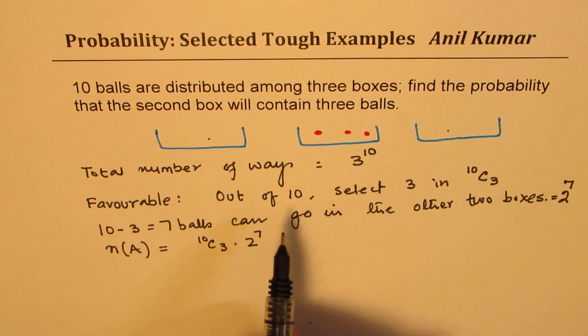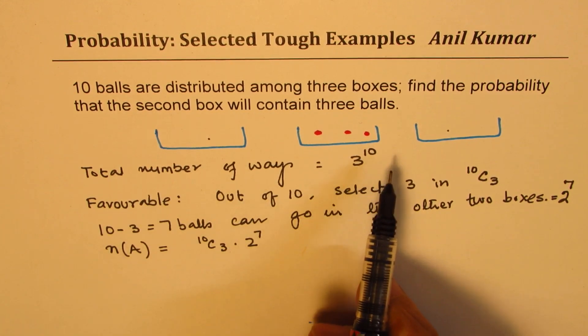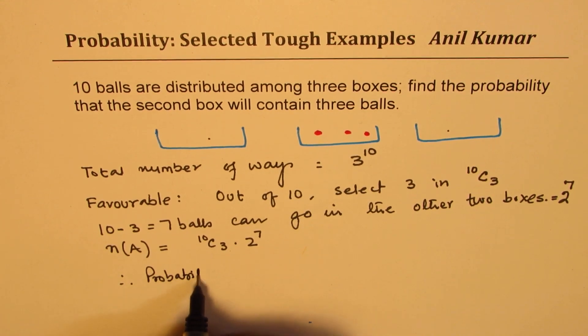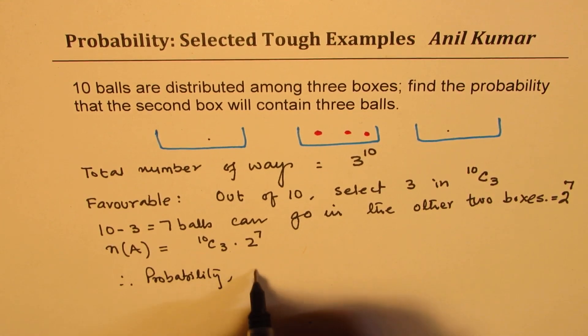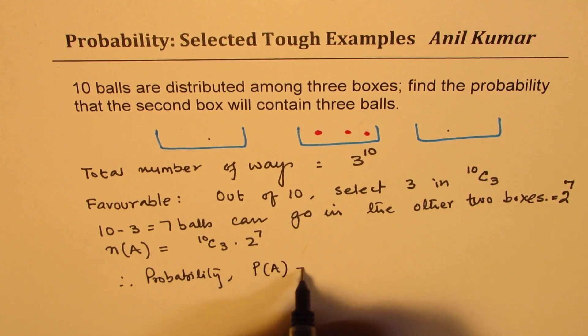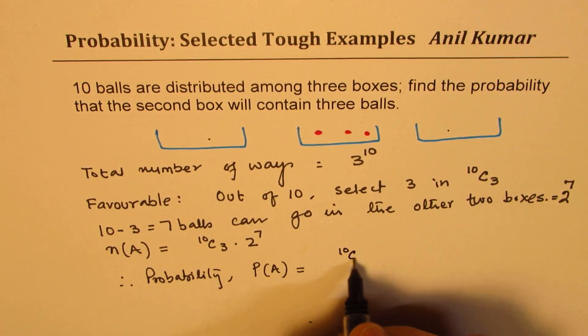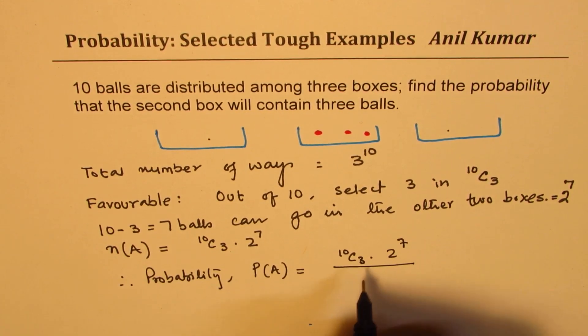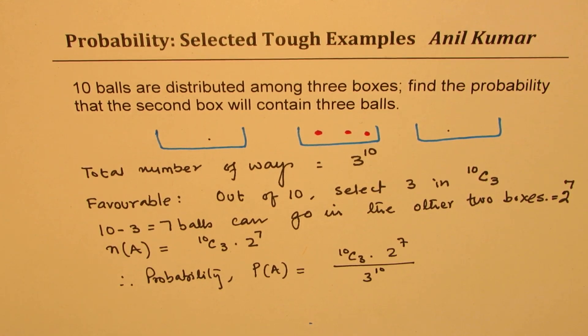And, total number of ways are 3 to the power of 10. Therefore, we get the probability for this particular event as a ratio of 10C3 times 2 to the power of 7 divided by 3 to the power of 10. That is how you could actually find the solution for this question. That's your answer.